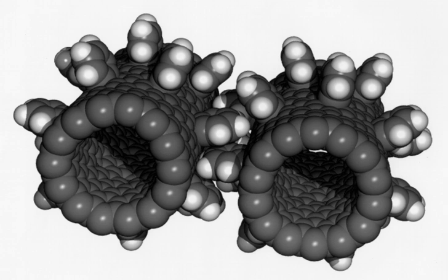Nanomaterials – field that studies materials with morphological features on the nanoscale, and especially those that have special properties stemming from their nanoscale dimensions. Fullerenes and carbon forms: Fullerenes – any molecule composed entirely of carbon, in the form of a hollow sphere, ellipsoid, or tube. Fullerenes spheres and tubes have applications in nanotechnology.